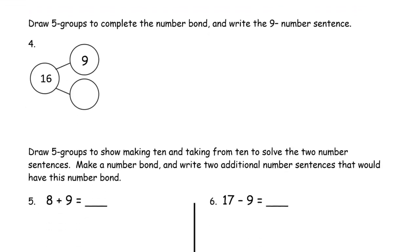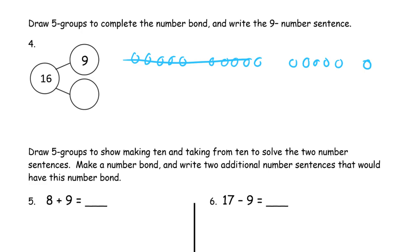And one more makes 16. We draw 16 in five group rows and cross out nine. There's one left from the ten group, and over here is six with one more — seven. Sixteen minus nine equals seven.